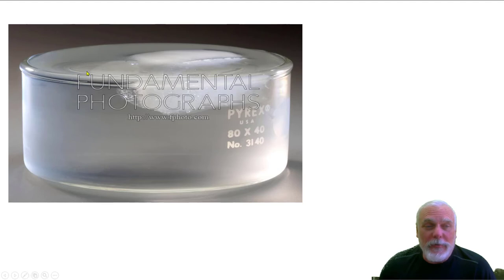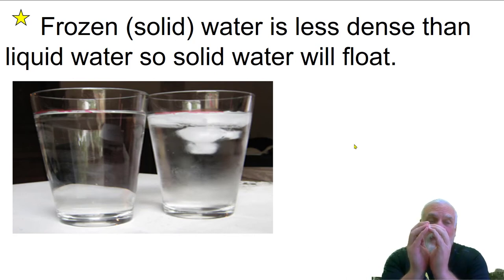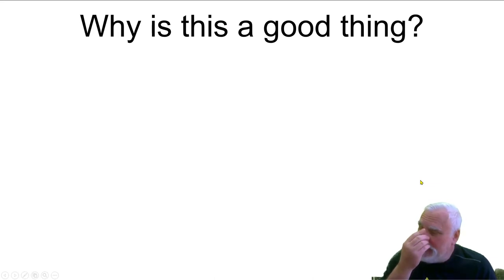Here in this photo, you see this jar. It was filled up to the top with water. As the water freezes, you can see how it's starting to actually go above the jar level. Frozen or solid water is less dense than liquid water, so solid water will float. The reason why it's less dense is that it's the same amount of matter, but as it solidifies, it increases its volume. The mass stays the same, the volume increases. Density is mass divided by volume, so the density is going to decrease. That's why ice cubes will float in your glass of water.